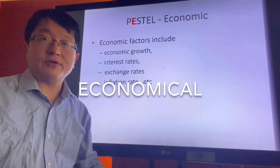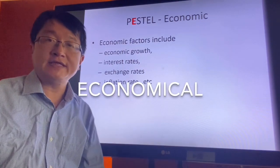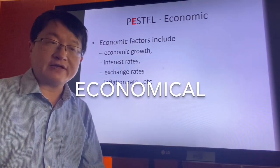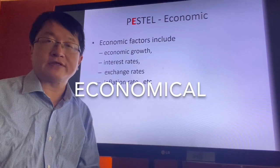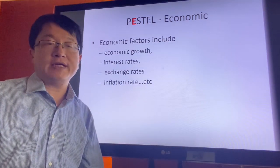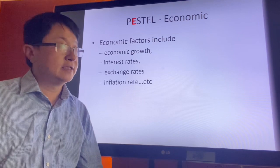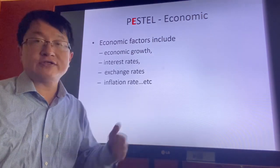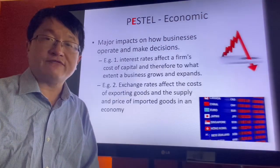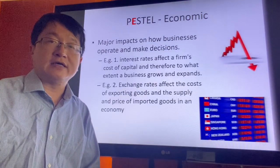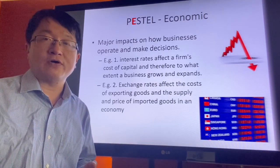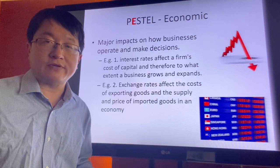The second perspective, E, means economic. Economic factors include, for example, GDP economic growth, the interest rate, currency rate, the inflation rate, and the employment rate, and so on. All these factors will affect the affordability and the spending power of the people in those areas.